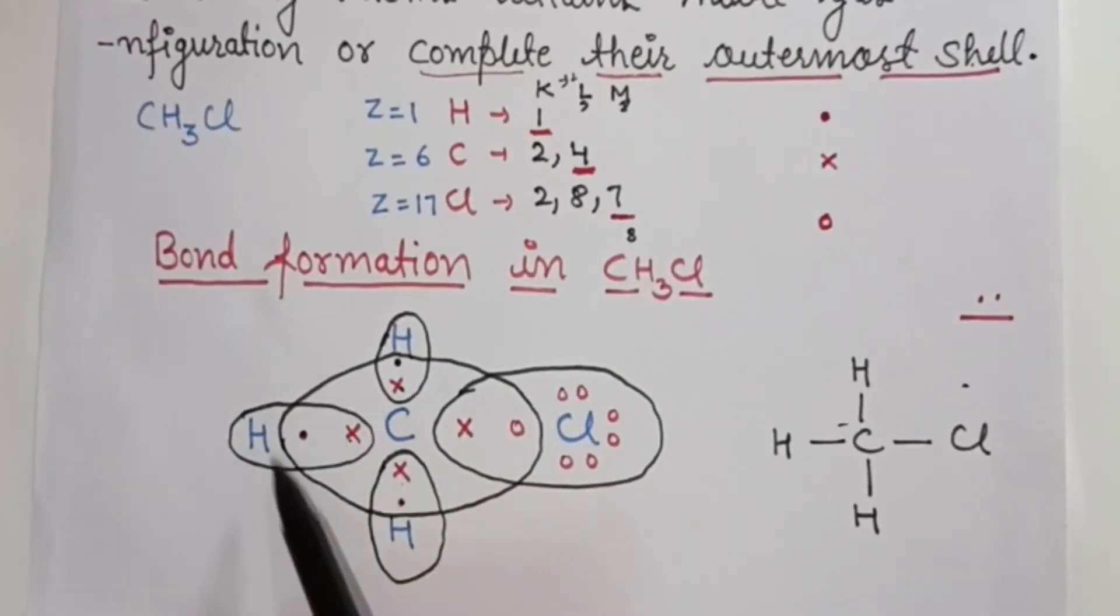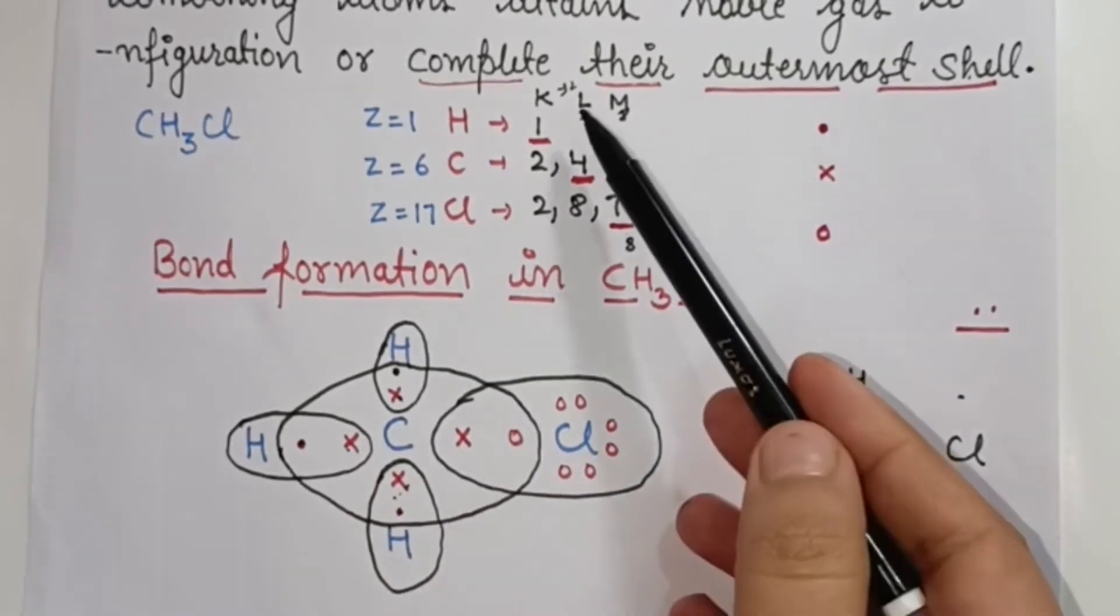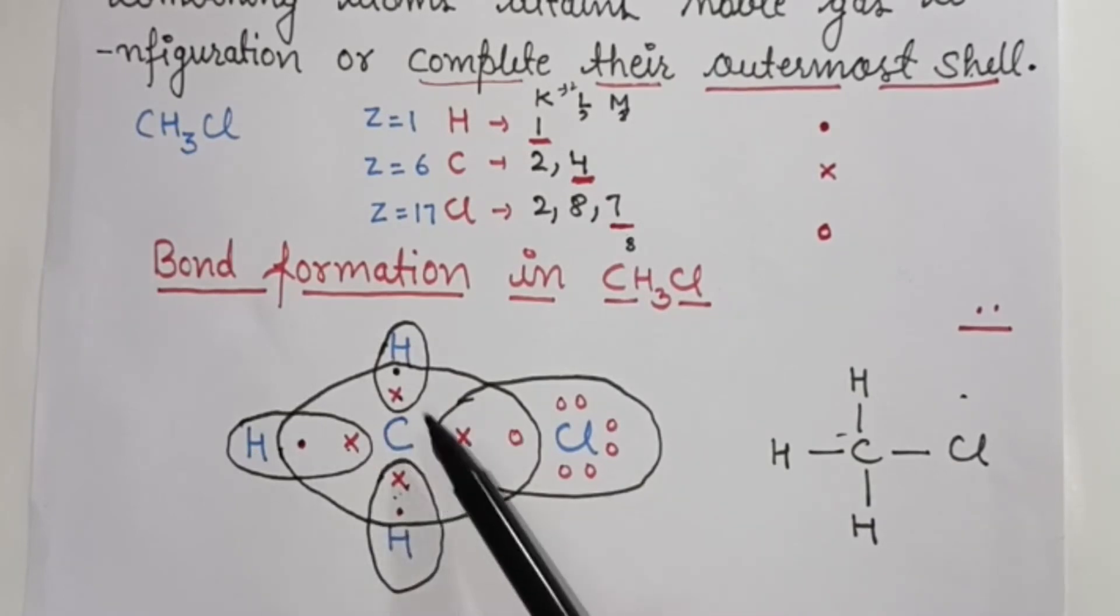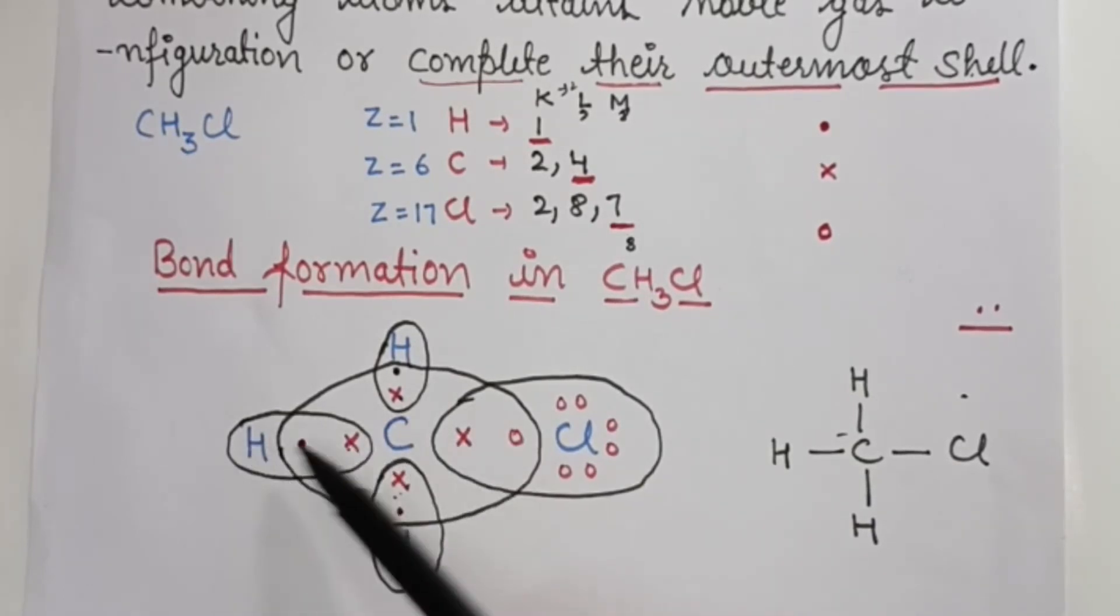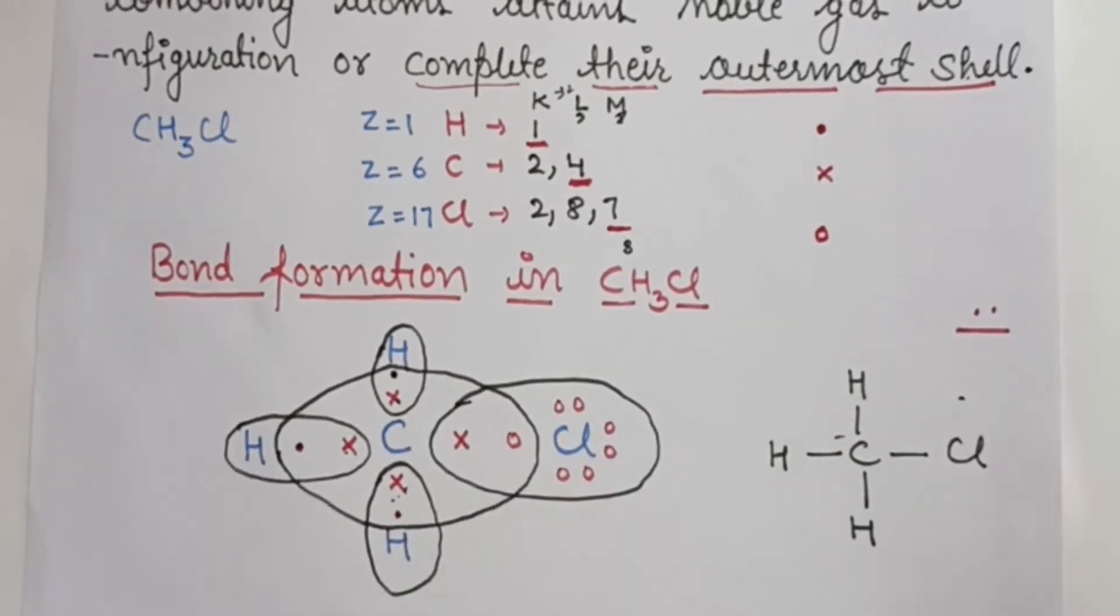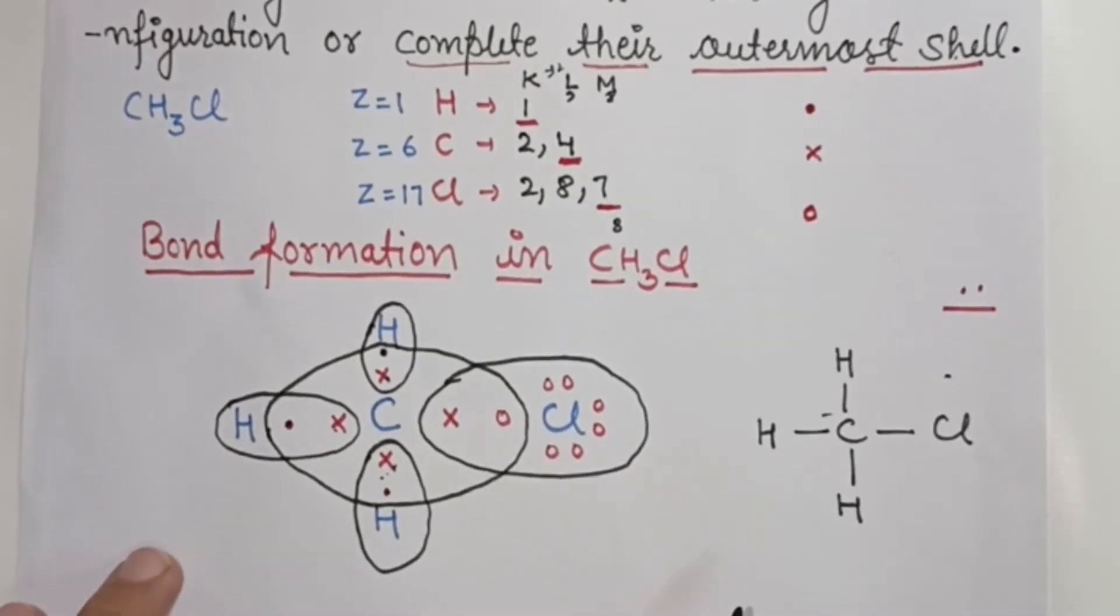So carbon has 4 valence electrons and how many are sharing? 1 from hydrogen, 2, 3, and 4. Complete, so 8 will be in L-shell. Hydrogen has 2 electrons and chlorine completes its shell. This is the bonding in CH3Cl.